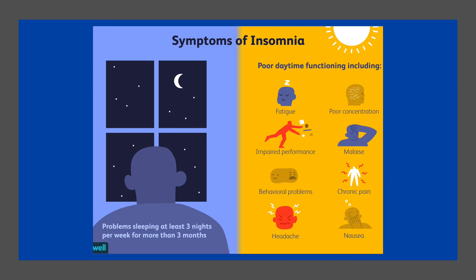Insomnia can occur independently or as a result of another problem. Conditions that can cause or result in insomnia include psychological stress, chronic pain, heart failure, hyperthyroidism, heartburn, restless leg syndrome, menopause, and certain medications and drugs such as caffeine, nicotine, and alcohol. Other risk factors include working night shifts and sleep apnea, the latter of which Shrey will discuss later on in the episode.